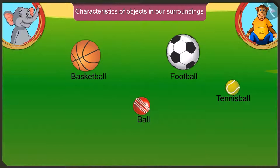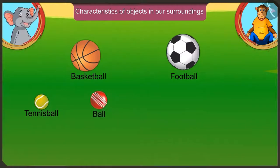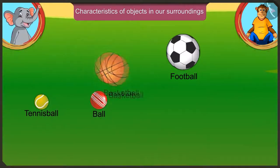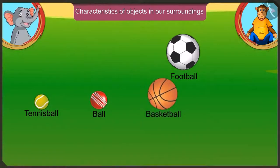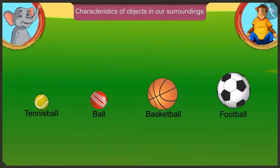Now let's arrange these balls in ascending order of their size. According to their size, we first place the smallest tennis ball, then the ball bigger than that, then basketball, and finally the largest football.